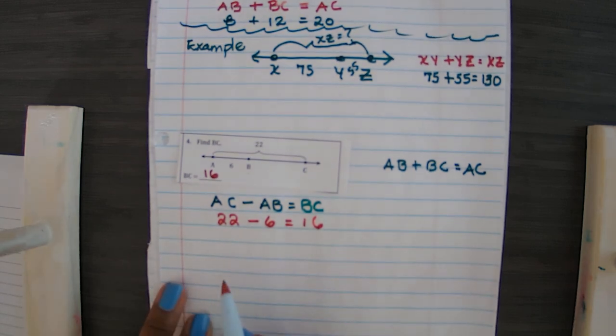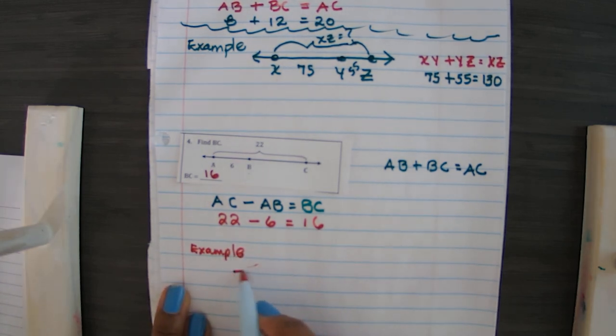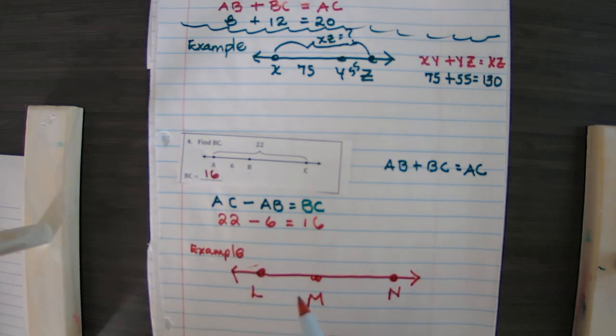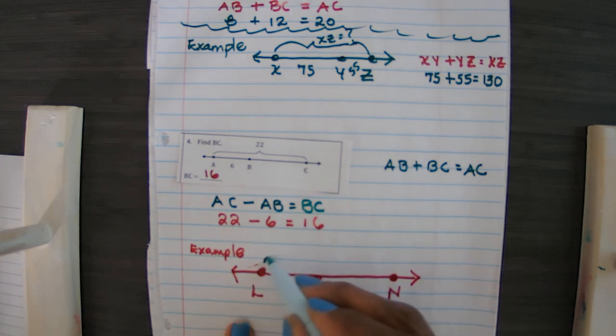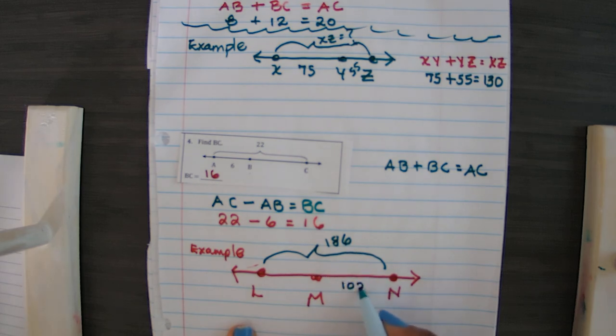Okay, let's get another example in. I'm going to have this one LMN. Here's L, M, and N. And of course they're on the line, this is a line segment. Okay, we're going to have that the total length here, total distance, is 186. But the length of MN is 102 units.